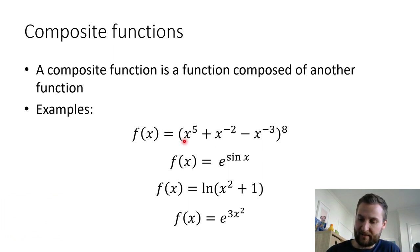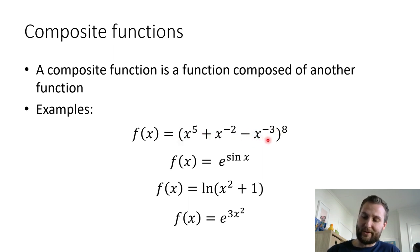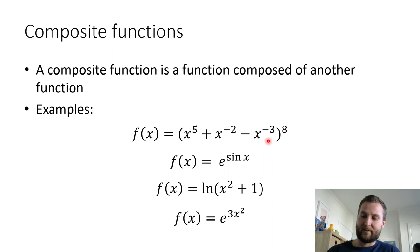So f of x equals a few terms in a polynomial, and then to the exponent 8 outside. Now you might want to expand this, but because it's to the power 8, that would be a nightmare — you'd have 8 sets of brackets with 3 terms in them. Recognizing that you've got something inside brackets all to the power 8, where the something in the brackets is your composite portion, and then your outside function is the exponent 8.